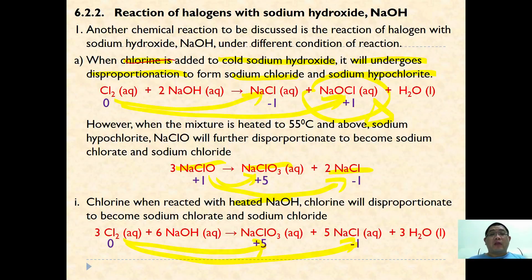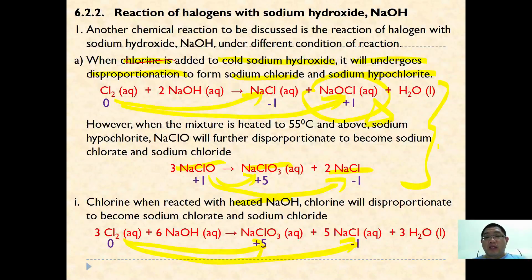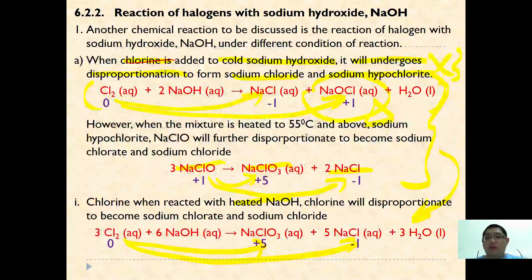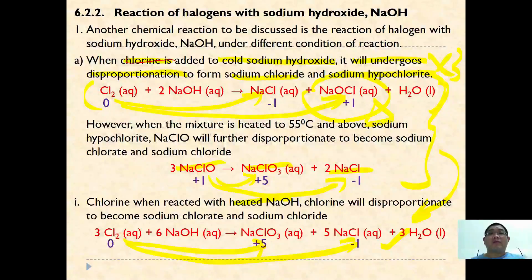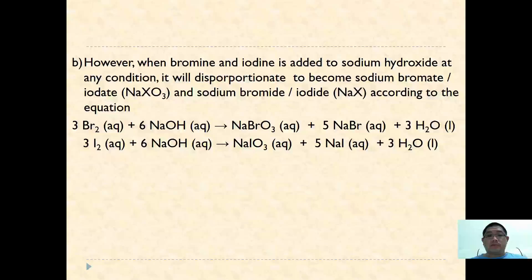If you study carefully, these two different conditions are actually related by Hess's Law. If you multiply the first-step equation by three, you eventually get the same equation as the direct heated reaction. So please be careful about the different conditions used to form different products when chlorine reacts with sodium hydroxide.